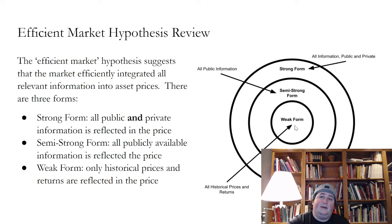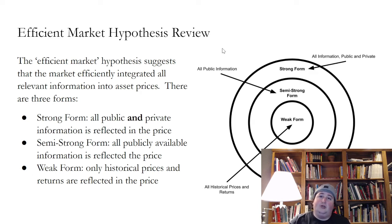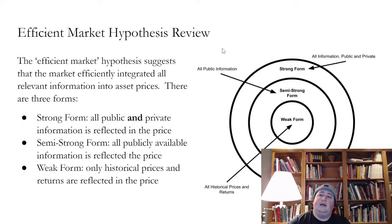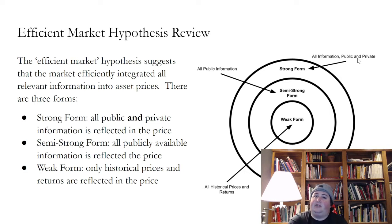However, the semi-strong form does not fully hold. The reason is that all publicly available information has costs to factor in — there are costs to collecting it and costs to processing it. Those two costs prevent it from being fully factored in at any given time, so the market is not fully efficient. The strong form — all information public and private — also has a limit to arbitrage: federal securities laws and insider trading laws, which prevent inside information from making its way into prices.